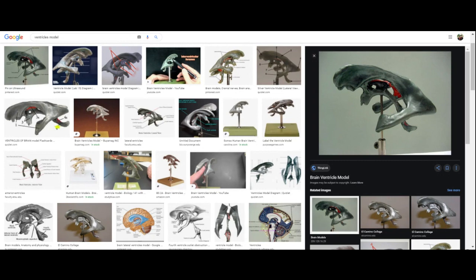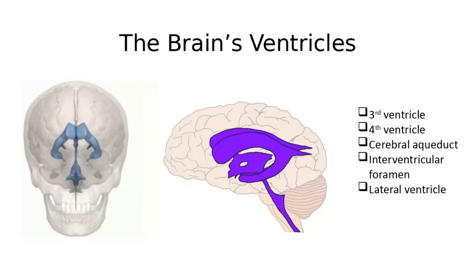Just ignore the choroid plexus labeling on the images — we're not labeling it. But make sure we know the choroid plexuses are the leaky blood vessels that make cerebrospinal spinal fluid. We're going to talk about them again in lecture in lesson eleven. Now's a good time to learn because it'll probably be on that homework assignment.